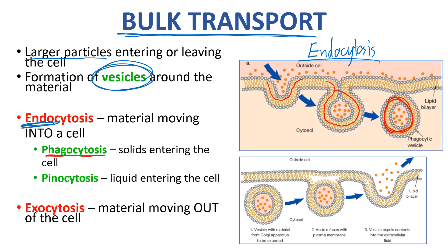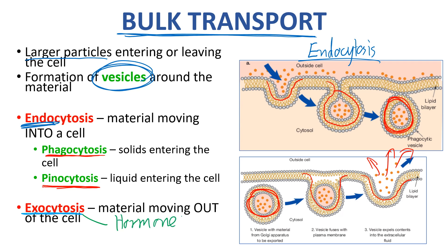The exact opposite of endocytosis is exocytosis — exo meaning to leave, like exit. The cell produces vesicles with proteins inside, packaged by the Golgi apparatus, which move up to the plasma membrane and fuse with it, releasing all those particles to the outside of the cell so they can diffuse away to the bloodstream or wherever they're needed. This process is used particularly for hormones released by glands around the body and for digestive enzymes released into our digestive system — for example by the salivary glands.